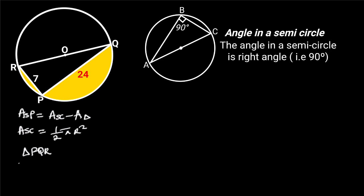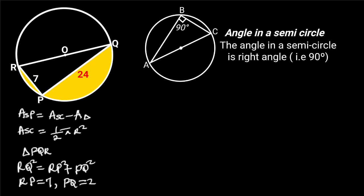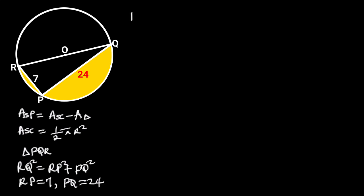From Pythagoras' theorem, RQ squared is equal to RP squared plus PQ squared. Substituting the values RP equals 7 and PQ equals 24 gives us RQ squared equals 7 squared plus 24 squared. 7 squared is equal to 49, and 24 squared is equal to 576. 49 plus 576 is equal to 625.